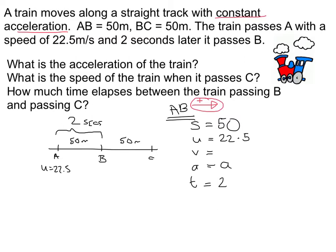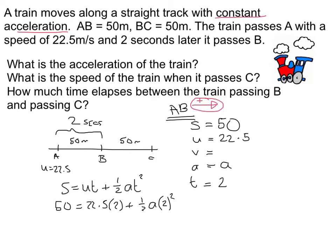Then we can fill in our SUVAT. The letter which is not included in this problem is V. So the equation we need is the one which doesn't have a V in, which is S equals UT plus a half AT squared. Filling everything in: 50 equals 22.5 times 2 plus a half AT squared. Solving gives 2.5 metres per second squared.